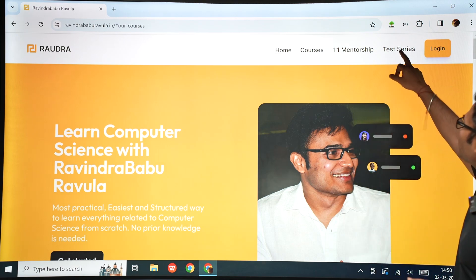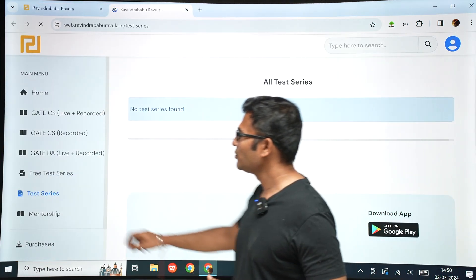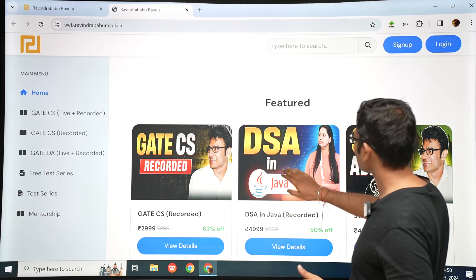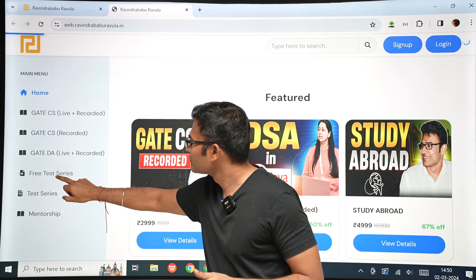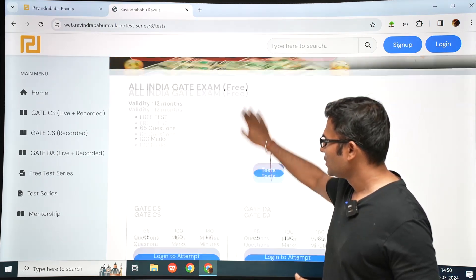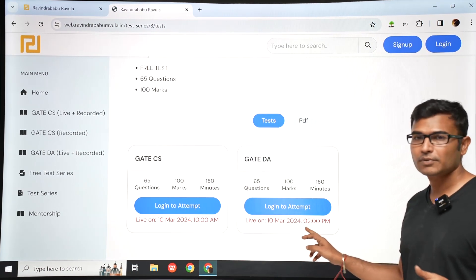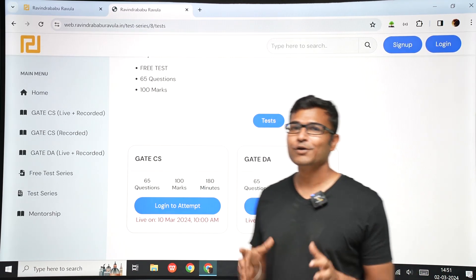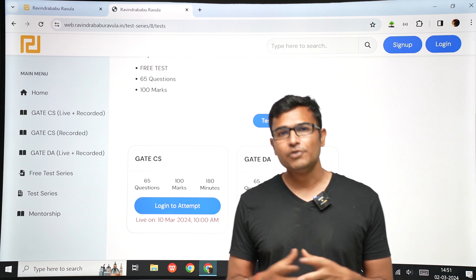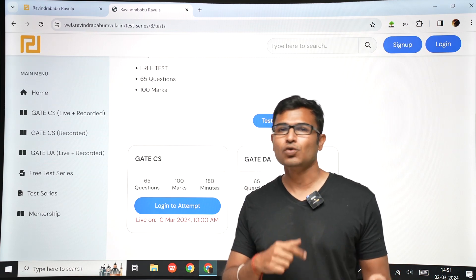And now how to write the test: you go to test series on the website ravindrababuravula.in. Go to test series, and then you are going to get free test series. In the free test series you can see All India GATE exam, view details. Then you are going to see two GATE tests: 10th March 10 a.m. is GATE CS test, and 10th March 2 p.m. is GATE DA test. So don't worry, I will not make your ranks or the results public. I will not post your name with your marks anywhere. I will keep them confidential. And if you want to find out your results, the number is available in the website WhatsApp number. You can WhatsApp us and we will send the results only to you.